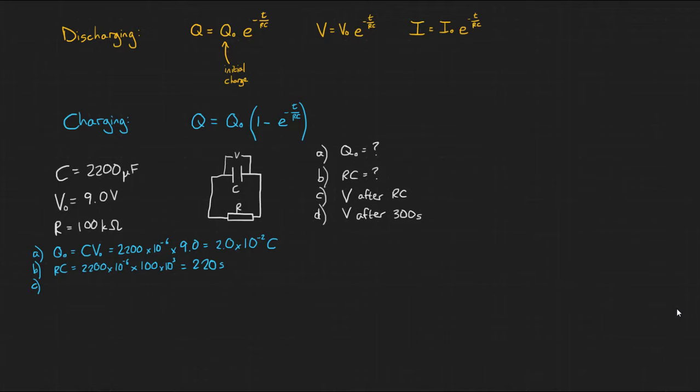Part C, let's find V after one time constant. So in this case, T is going to be equal to RC, so the equation becomes V equals V0 to the power of minus 1, or 9 times 0.37, which gives us 3.3 volts.